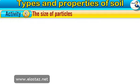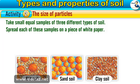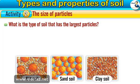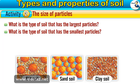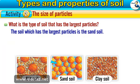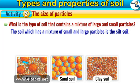Activity 2: The size of particles. To know the size of particles of each type of soil, take small equal samples of three different types of soil. Spread each sample on a piece of white paper and examine the size of particles using a magnifying lens. The soil which has the largest particles is the sand soil. The soil which has the smallest particles is the clay soil. The soil which has a mixture of small and large particles is the silt soil.